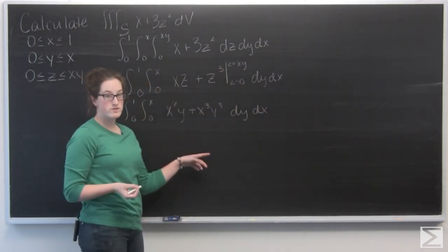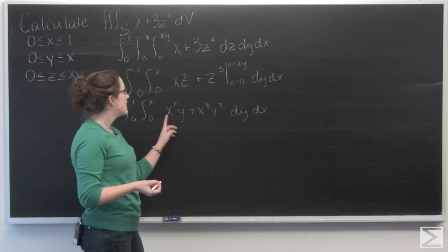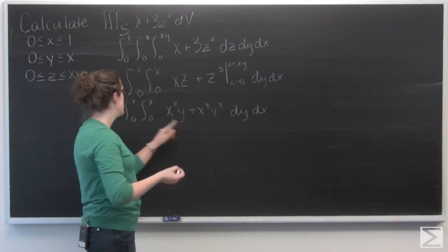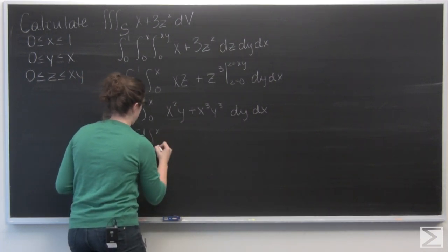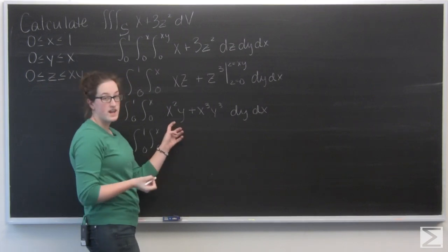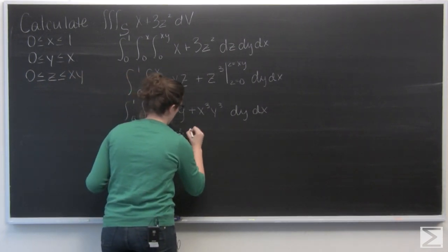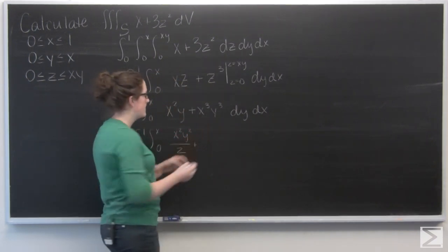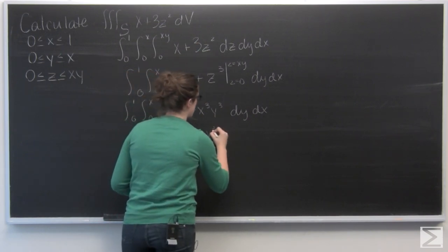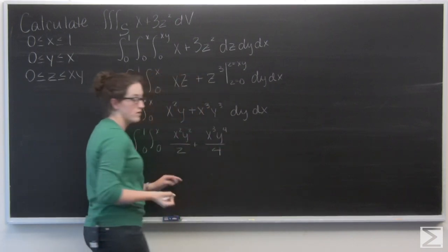So now I'm integrating with respect to y. I have a y in each term. So x squared is going to be like a constant. So we're going to be looking at x squared y squared over two. And for the next one similarly, x to the third, y to the fourth over four.